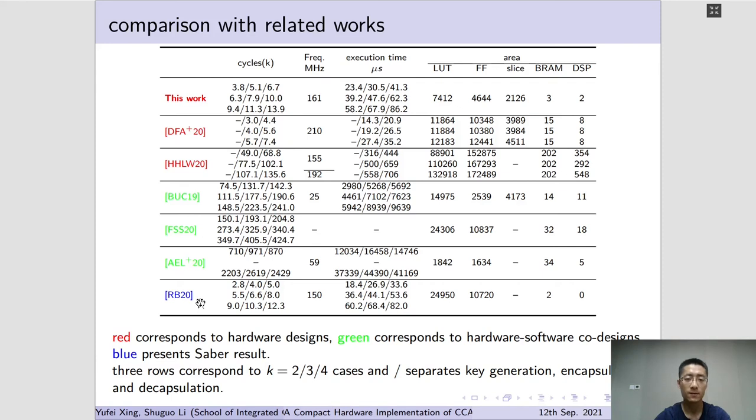Saber is another finalist in the contest, and the parameters are very close to that in Kyber. Compared with the related hardware design of Saber in RB-20, the timing performance of our design is pretty close to that in RB-20, while the LUT and FF consumption is more than 3 times and 2 times less than the design of Saber.